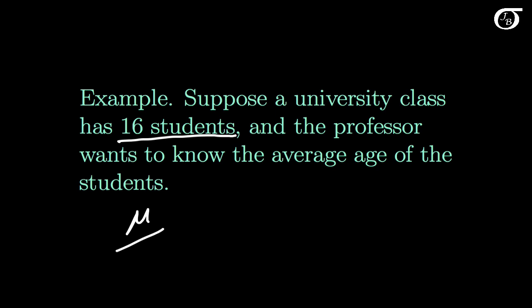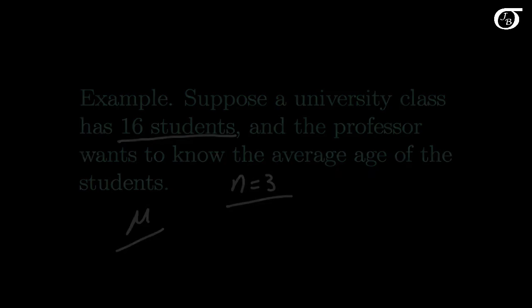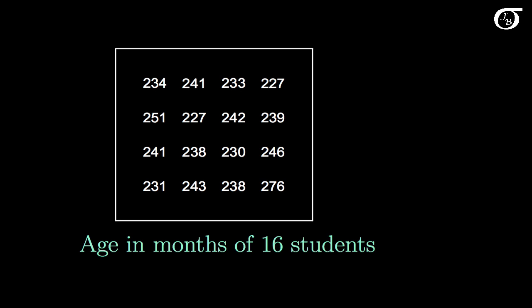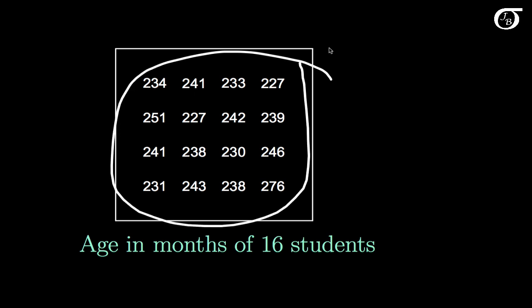I'm also going to assume in this contrived example that the professor can take a sample of three students and find out their ages — perhaps the professor has a friend in the registrar's office who will look up ages for three students. Unknown to the professor, these are the true ages for the 16 students in the class, and we can calculate the true population mean mu. If we take the average of those 16 values, we would see that mu is 239.8125.